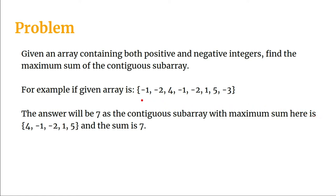For example, if the given array contains both positive and negative integers — minus one, minus two, four, minus one, minus two, one, five, and minus three — we have to find out the maximum sum of a contiguous subarray. It has to be contiguous and the sum of those elements has to be maximum out of all the combinations of subarrays we can obtain from this given array.